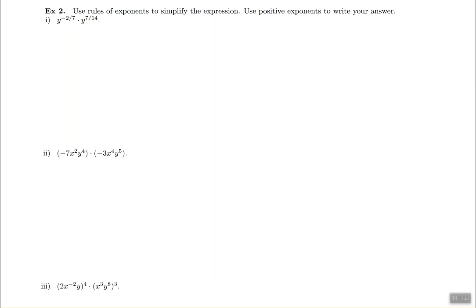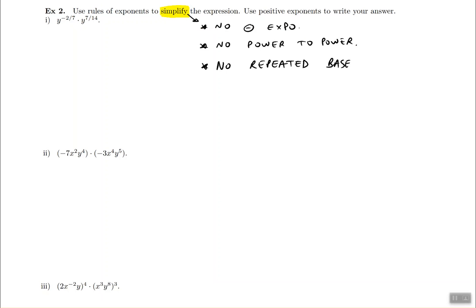Example 2 says use rules of exponents to simplify the expression and use positive exponents to write your answer. Simplifying the expression means you should not have a negative exponent in your answer, you cannot have power to power in your answer, and you cannot have repeated bases in your answer. As long as you have one of those three, that means you're not done.